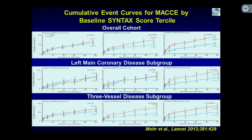Looking at individual risk groups in the SYNTAX trial 5-year data for left main patients: in the less than 22 and 23-to-32 syntax score tertiles, PCI and CABG outcomes are exactly identical. The difference occurs only when syntax score is more than 32. For 3-vessel disease, CABG shows superiority even in the low-risk group, and more importantly the difference is marked with syntax score 20 and above. So for 3-vessel disease, syntax score has more implication even in the intermediate-risk group of 23-32, while for left main only, it comes into equation with syntax score 33 and above.